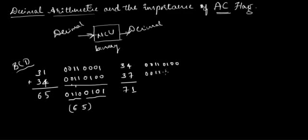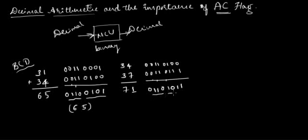When I add these two BCD numbers, working through the binary addition bit by bit, I get a carry from the lower nibble into the higher nibble. The final result comes out to 0110 1011, which is equivalent to 6B in hexadecimal. But I should have got 71 — instead I am getting 6B as my result, so here I'm not getting the right result.